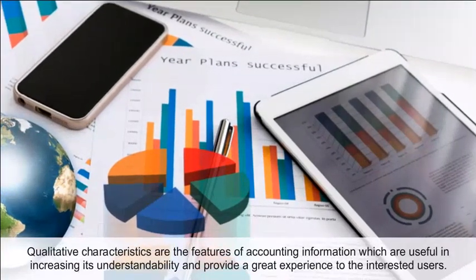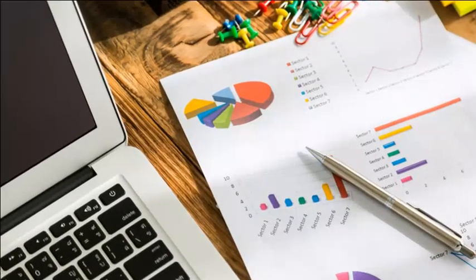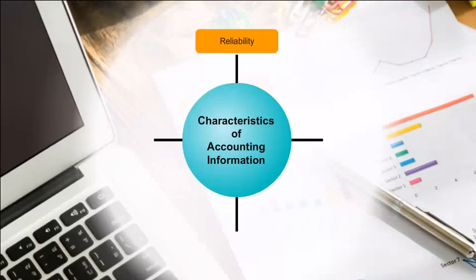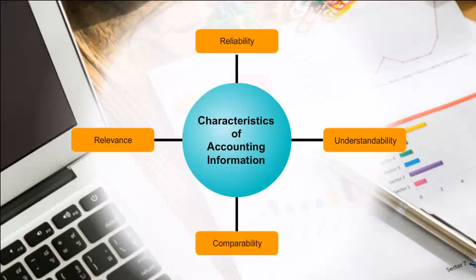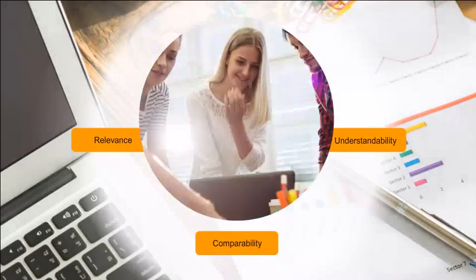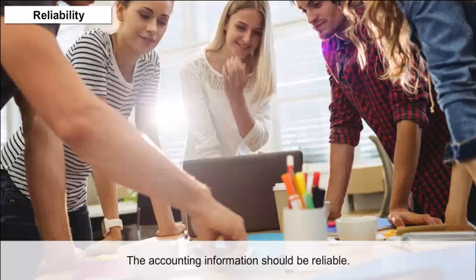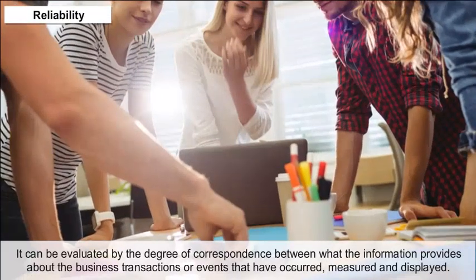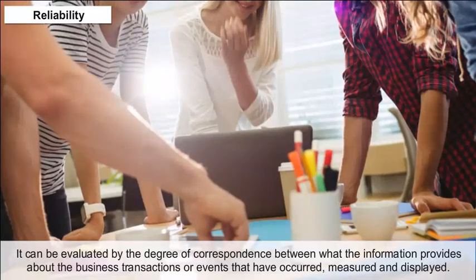A perfect accounting information must possess the characteristics of reliability, relevance, understandability and comparability. Reliability: The accounting information should be reliable. It can be evaluated by the degree of correspondence between what the information provides about the business transaction.